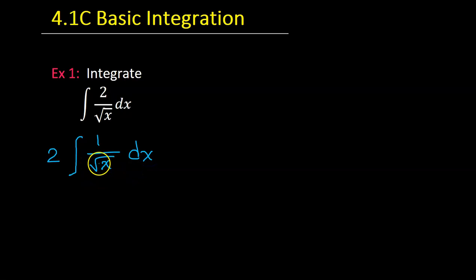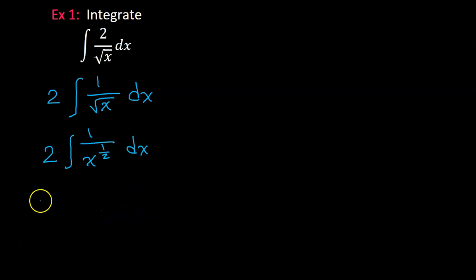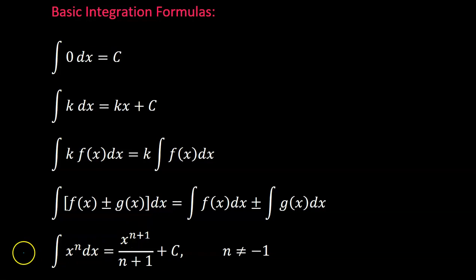Now let's rewrite the radical — this is x to the 1/2 power. So this will become 2 times the integral of 1 over x to the 1/2 power dx, which is the same thing as 2 times the integral of x to the negative 1/2 power dx. Now we are ready to use the power rule of integration.